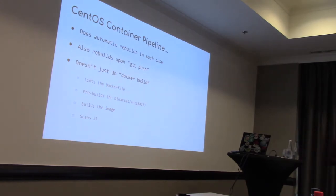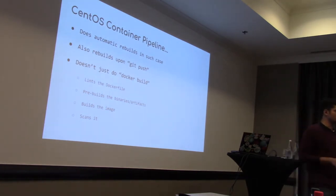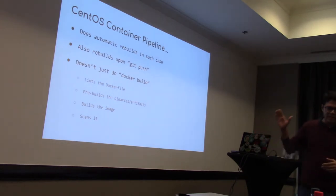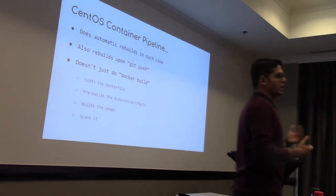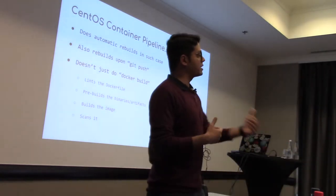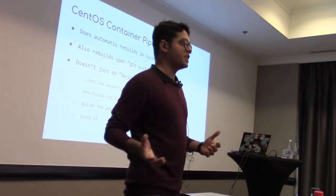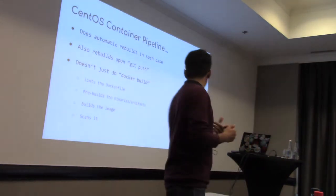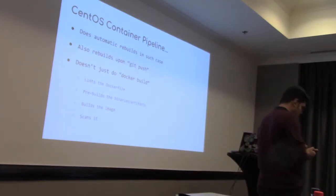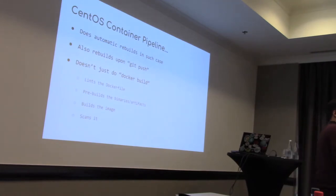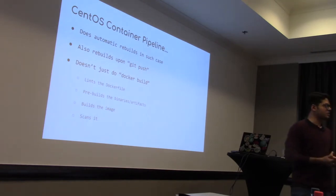Once the container image is built, we scan it — I have a dedicated slide about scanning. These are the basic steps the container pipeline service does: every time you do a push to your repo, or every time a parent container image is built and child images need rebuilding, we lint the Dockerfile, rebuild binaries or artifacts if requested, build the container image, scan it, and finally push it to the registry — in this case, registry.centos.org.